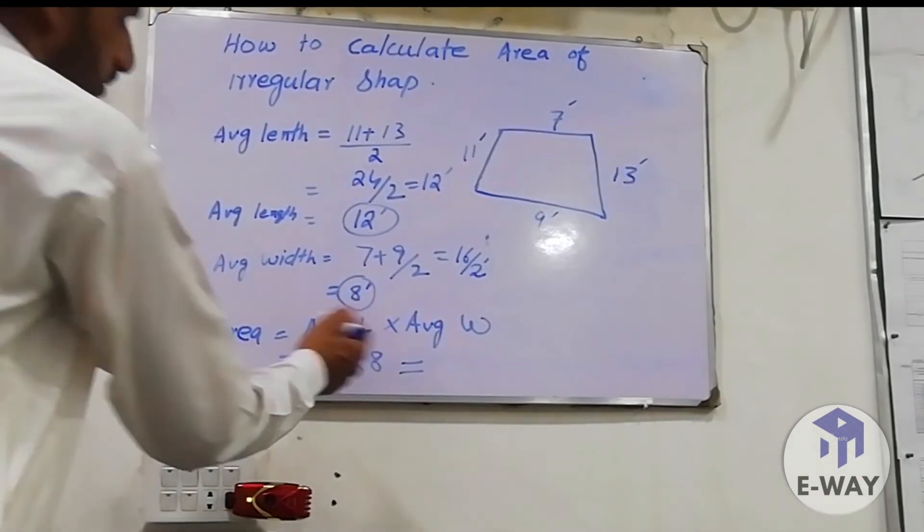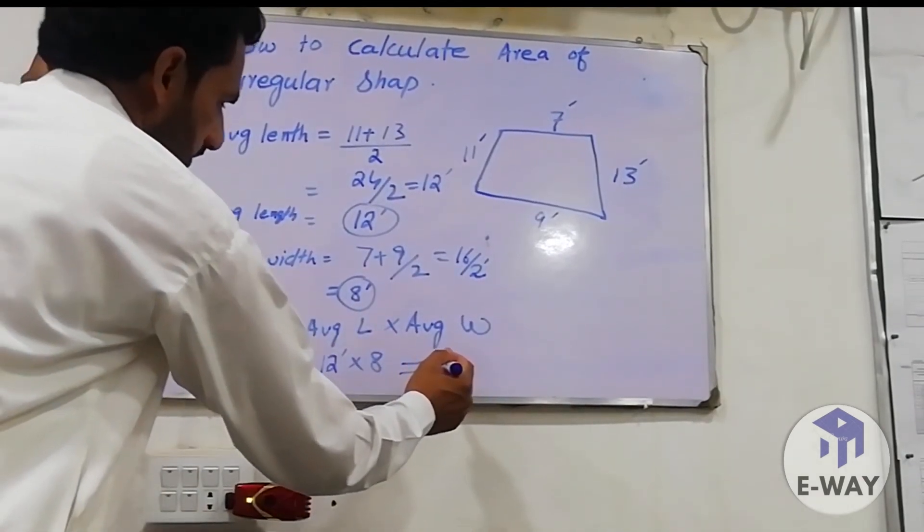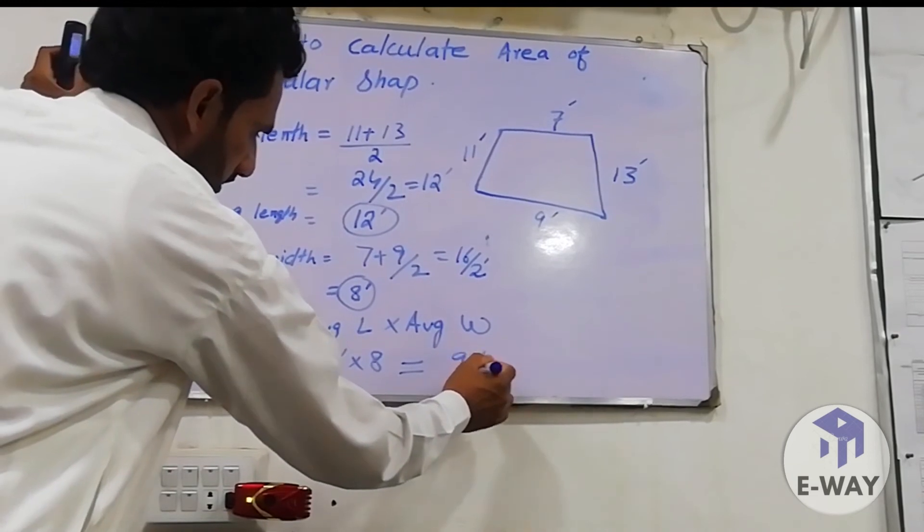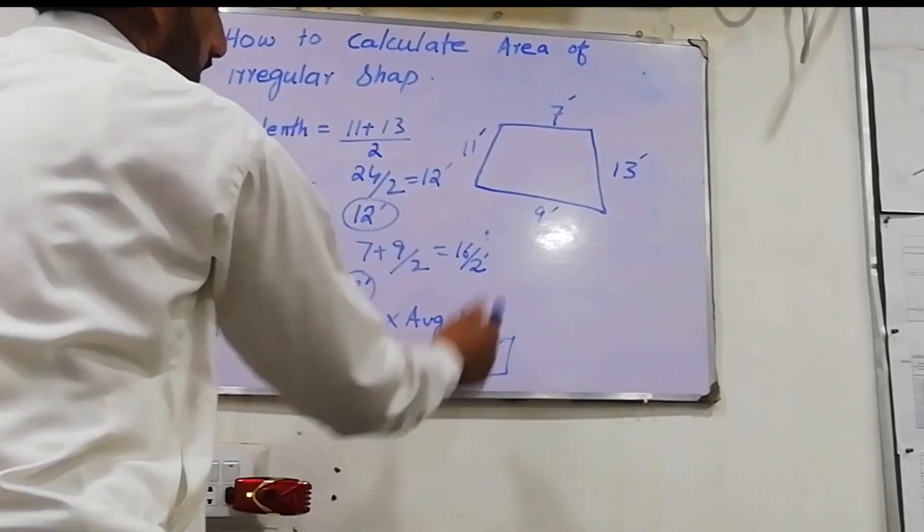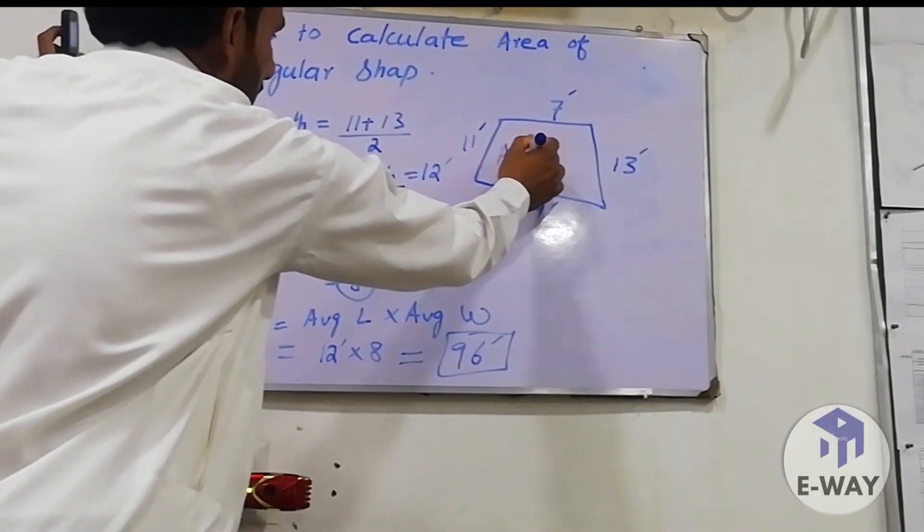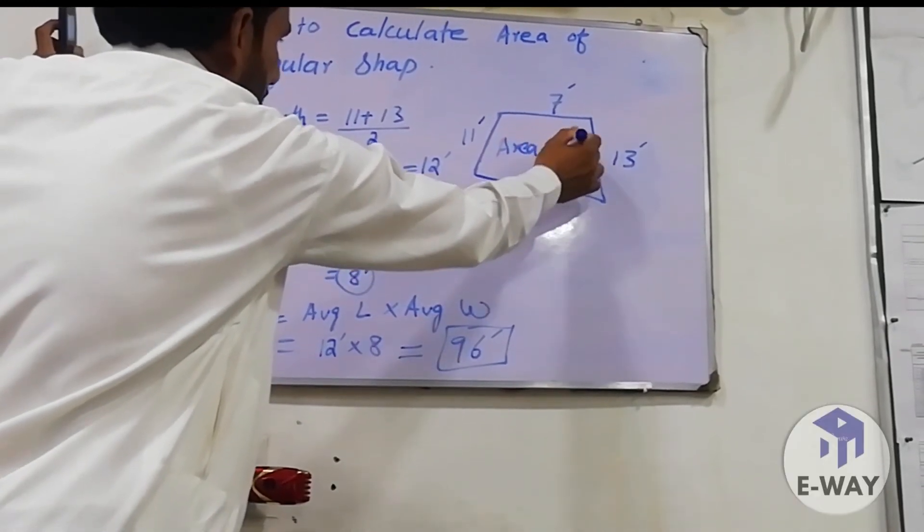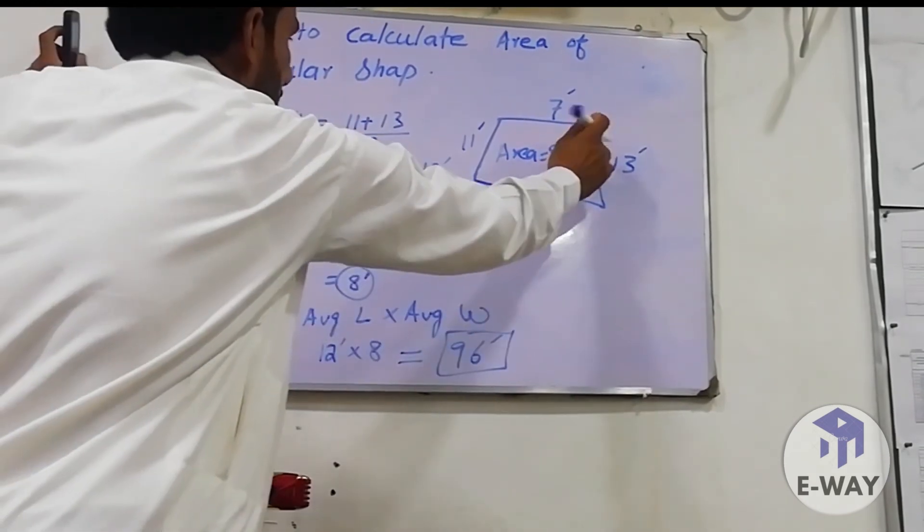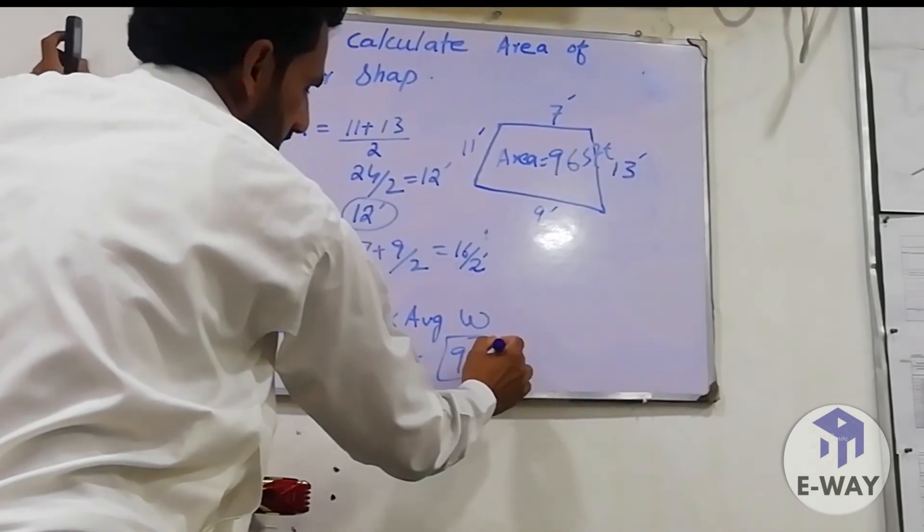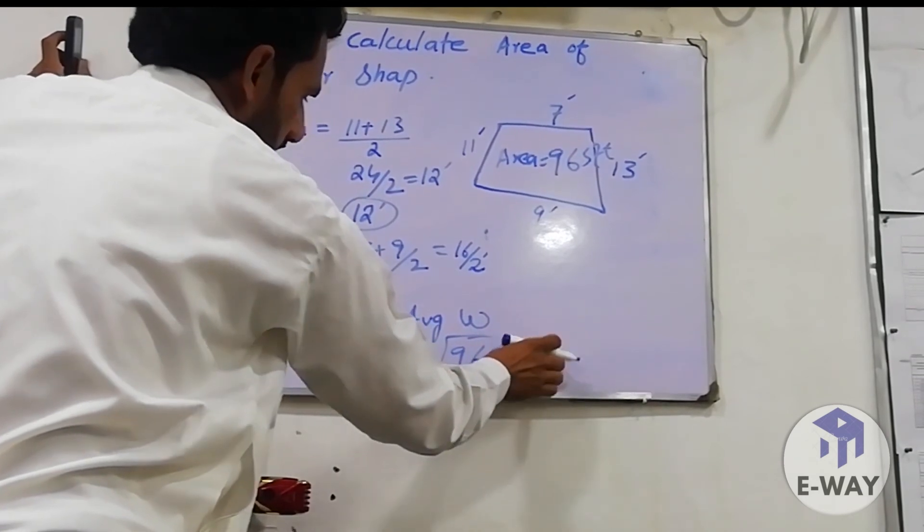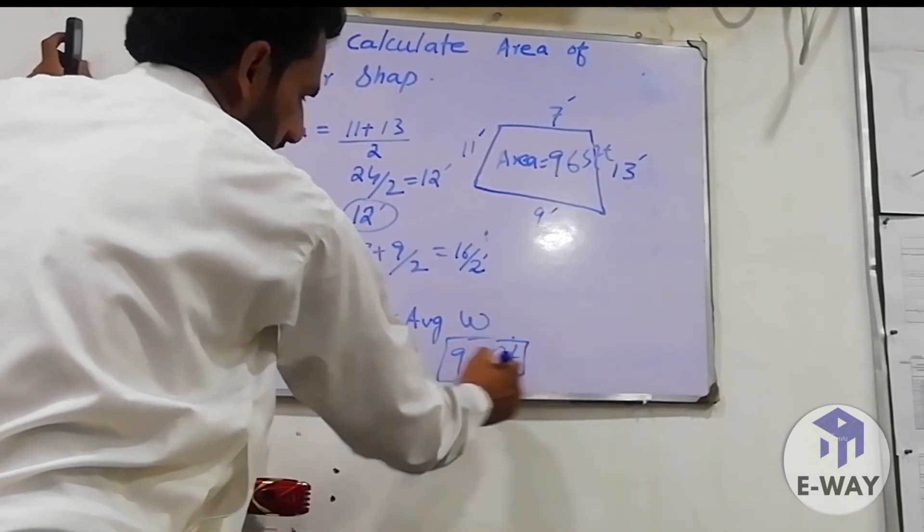We find area: 12 times 8 equals 96 square feet. In this figure, average area is 96 square feet. We calculated area of this irregular shape.